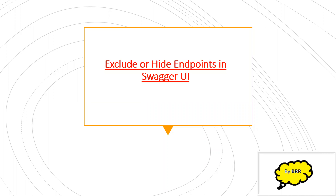Welcome back to BLR Knowledge Center. In this session, we'll see how we can exclude or hide endpoints in Swagger UI. Swagger UI is an open source framework which we can use for unit testing of your APIs, and developers can also use it to document endpoints from different controllers in a Web API. Sometimes a developer wants to hide their endpoints or even an entire controller in Swagger UI, and we're going to do that in .NET.